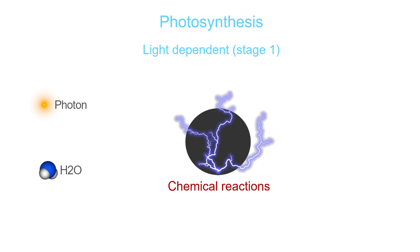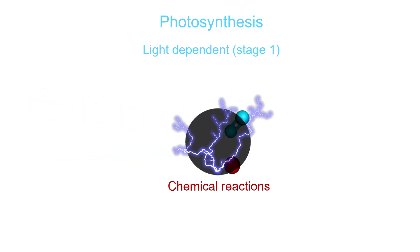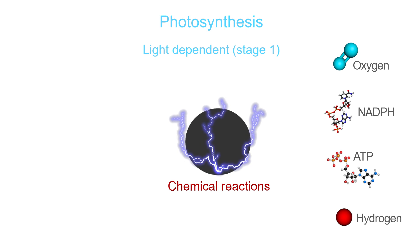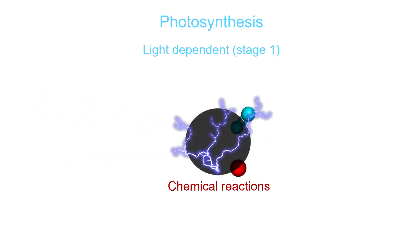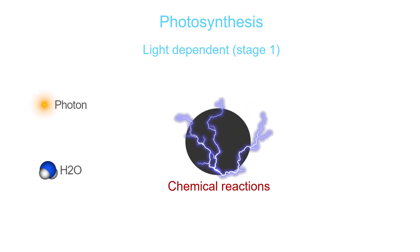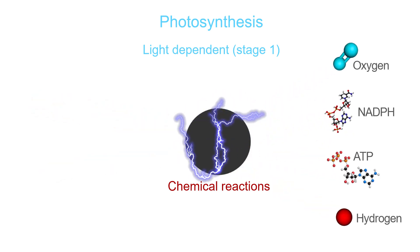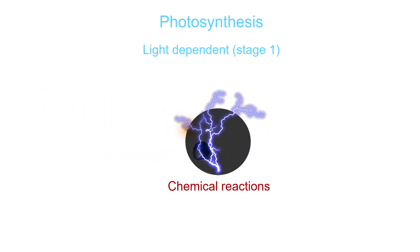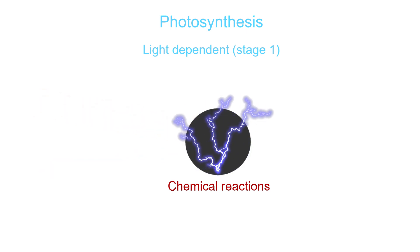Photosynthesis occurs in two stages: a light-dependent and a light-independent stage. In the light-dependent stage, photons from the sun are absorbed by a pigment called chlorophyll and go through a series of chemical reactions to produce ATP and NADPH. It is during this stage that water is split and oxygen is released back into the atmosphere.